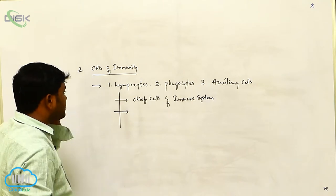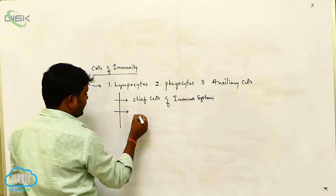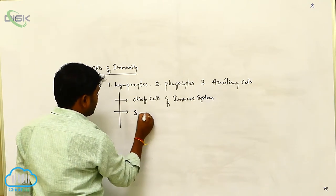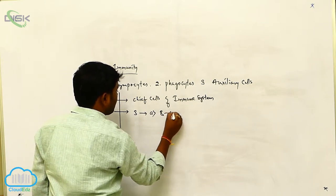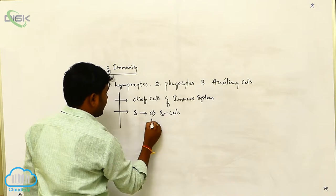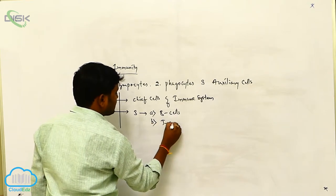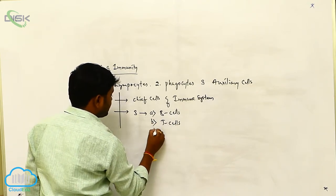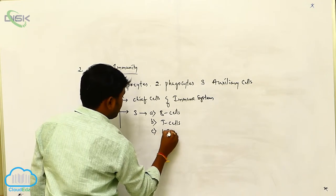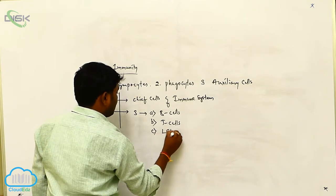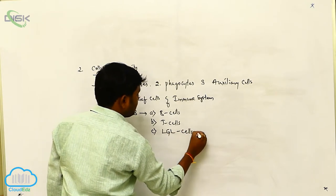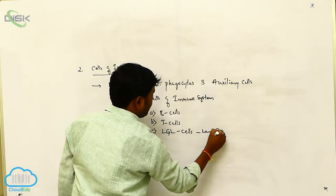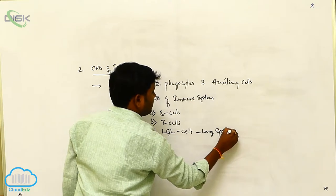Again, these lymphocytes are divided into three types. The first one, A, is B cells; B is T cells; and C is large granular lymphocytes, LGL cells.